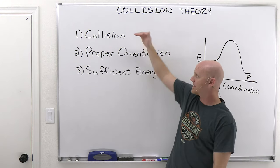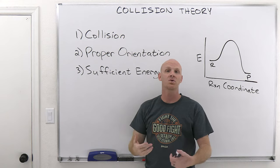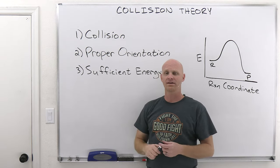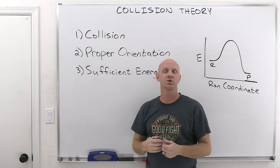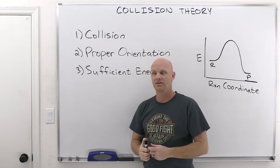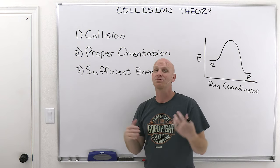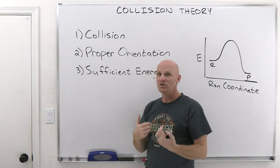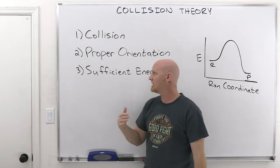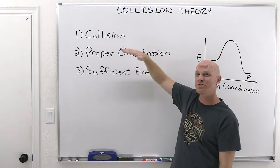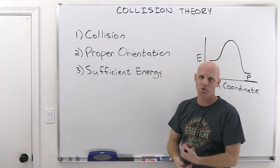But that's not enough. In addition to a collision, the molecules actually have to collide with the proper orientation. When a collision happens, bonds are going to be breaking to kickstart the reaction. The parts of the molecule where bonds are being broken have to be involved in the collision, or else the molecules just bounce off each other and no reaction happens. So you've got to have a collision, but also the molecules have to have the right orientation during that collision.